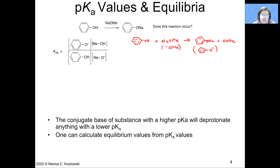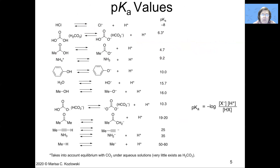One can calculate equilibrium values from pKa values, which means we need to know some pKa values or have a chart handy. Things commonly used in extraction include acids like hydrochloric acid and acetic acid. Conjugate bases frequently used include sodium bicarbonate, so we need to know the pKa of carbonic acid. Other bases include ammonia — we need the pKa of the conjugate acid — and hydroxide or methoxide, so it's useful to know the pKa of their conjugate acids.